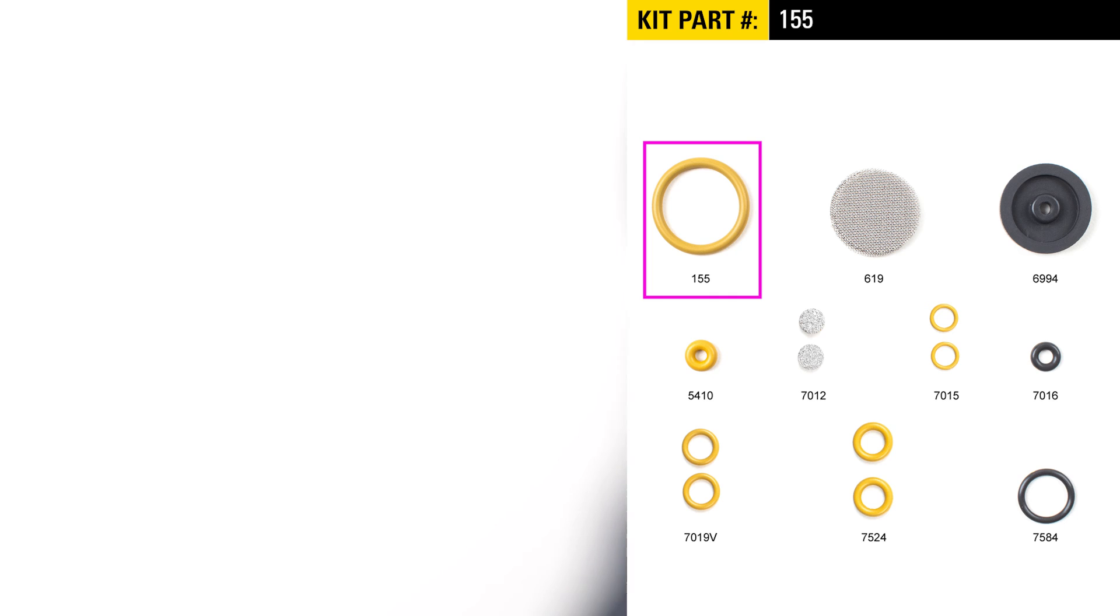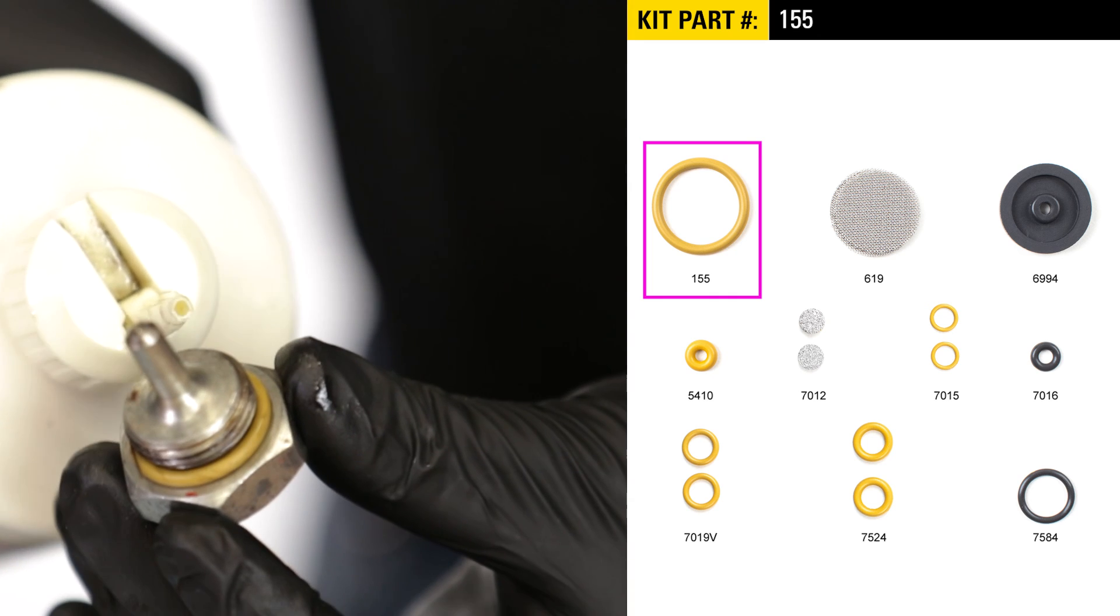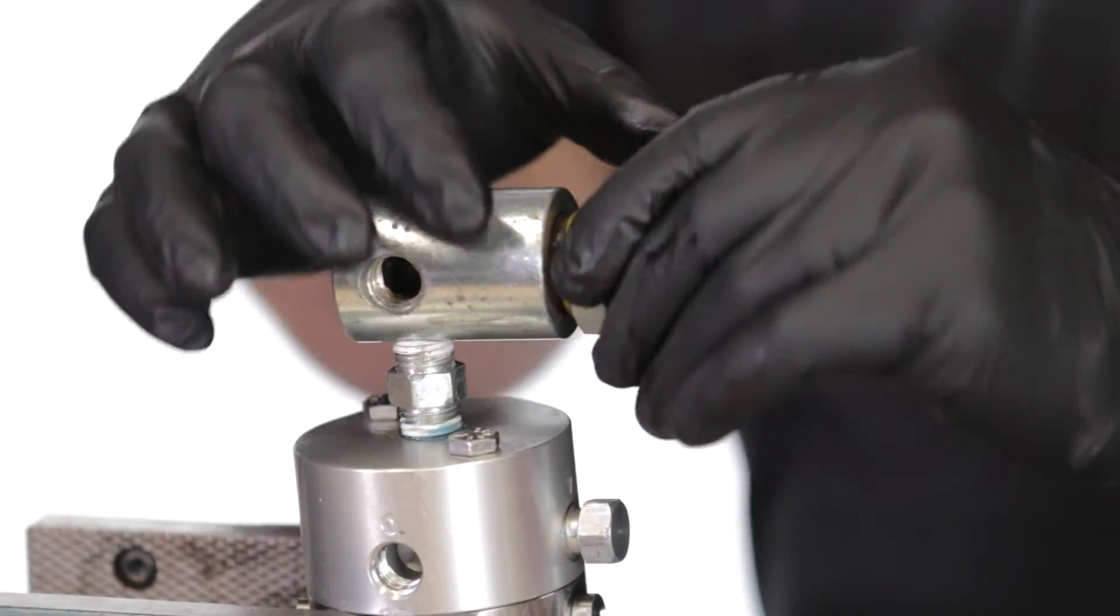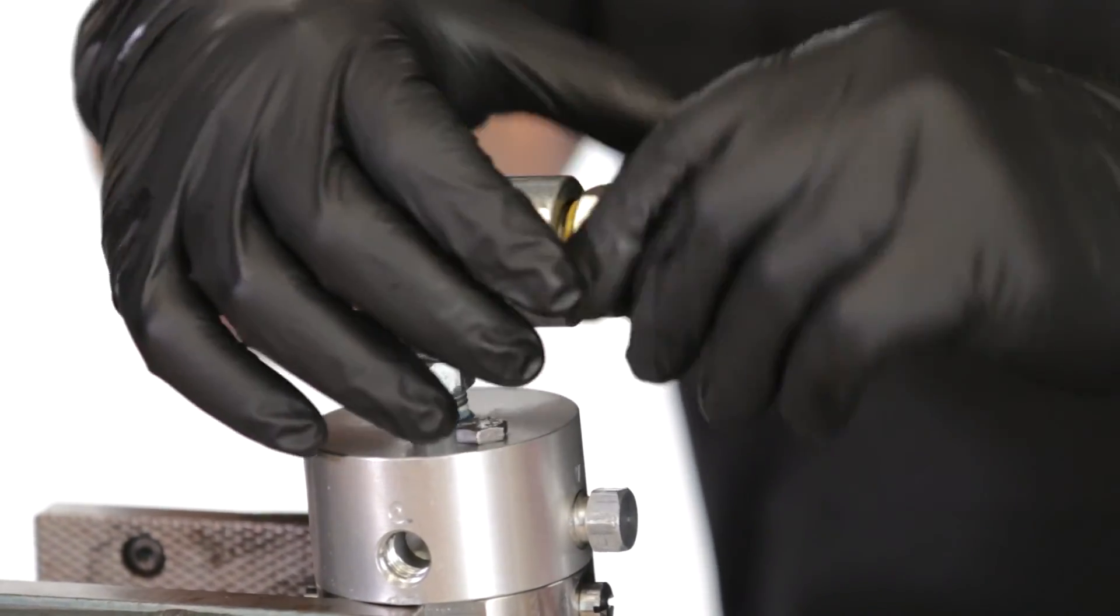Install the 155 O-ring on the cap and add a small amount of oil. Install it into the filter body by hand and then fully tighten it with an adjustable wrench.